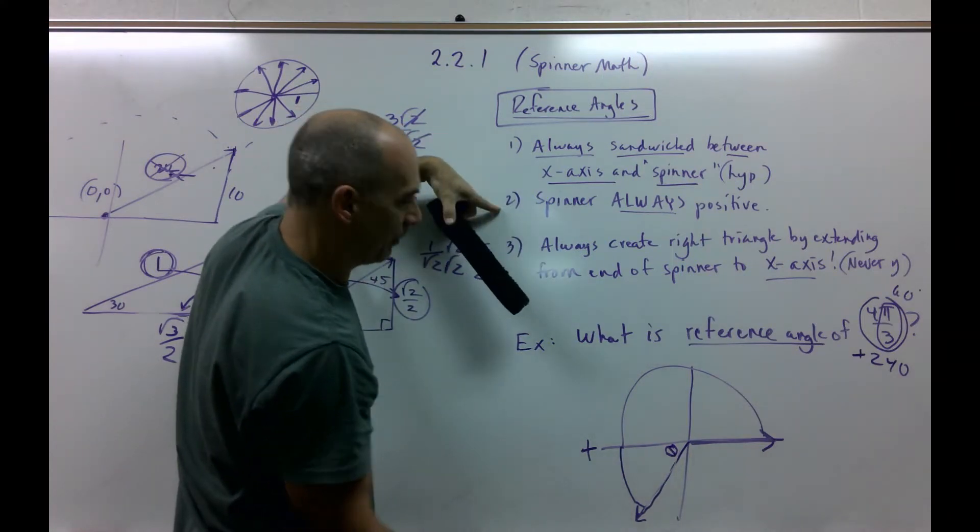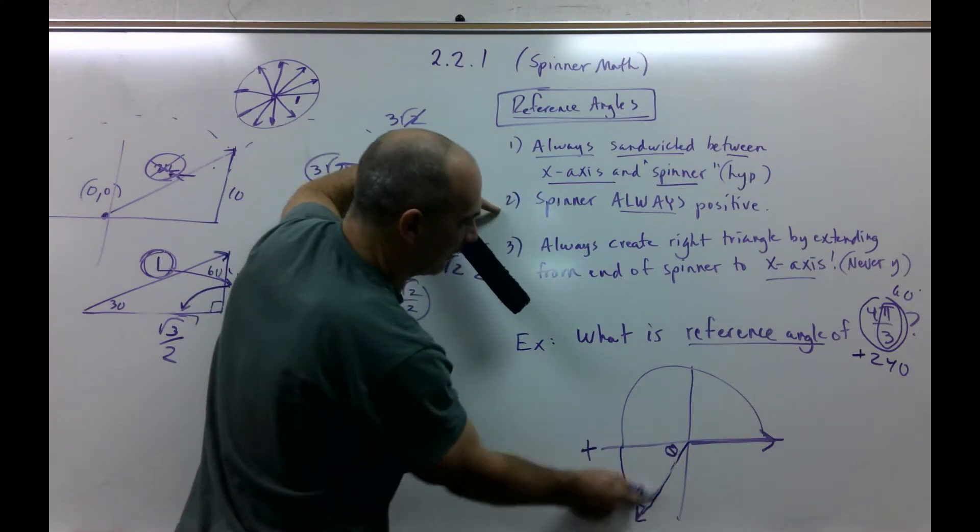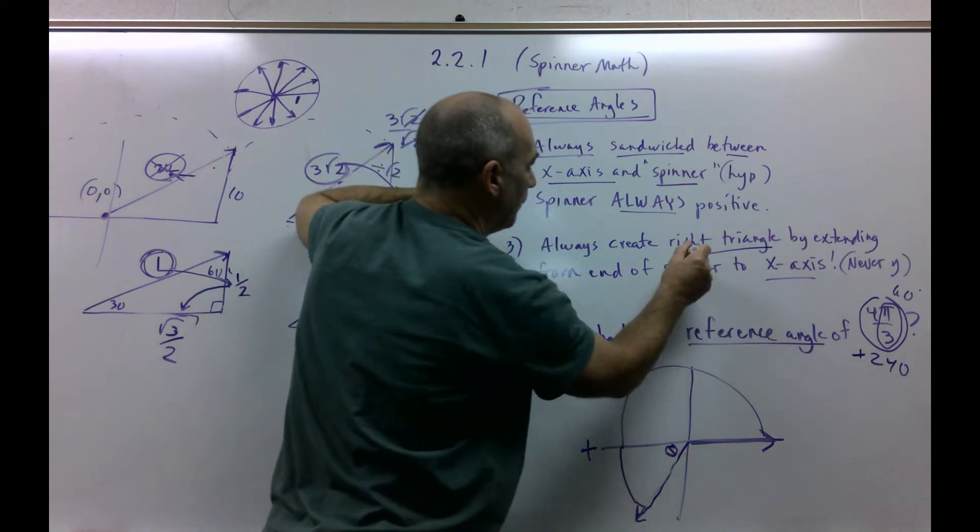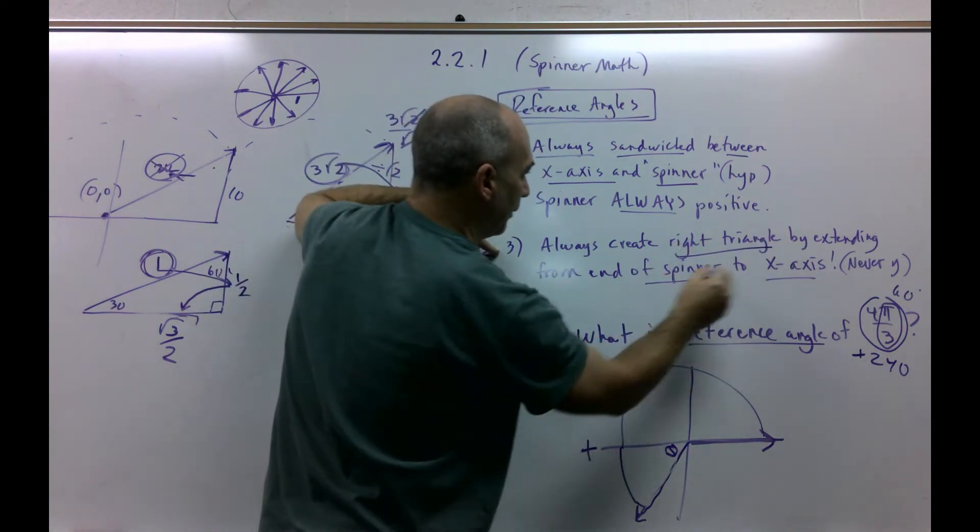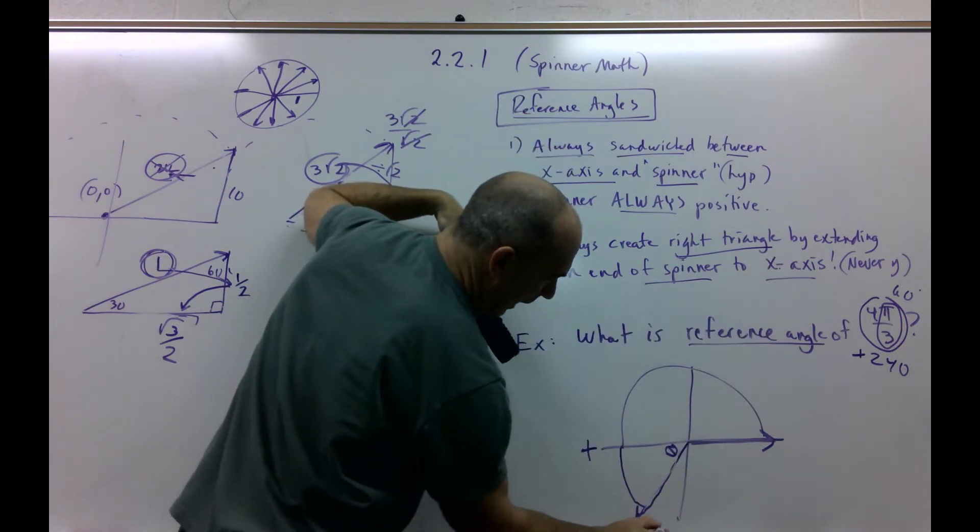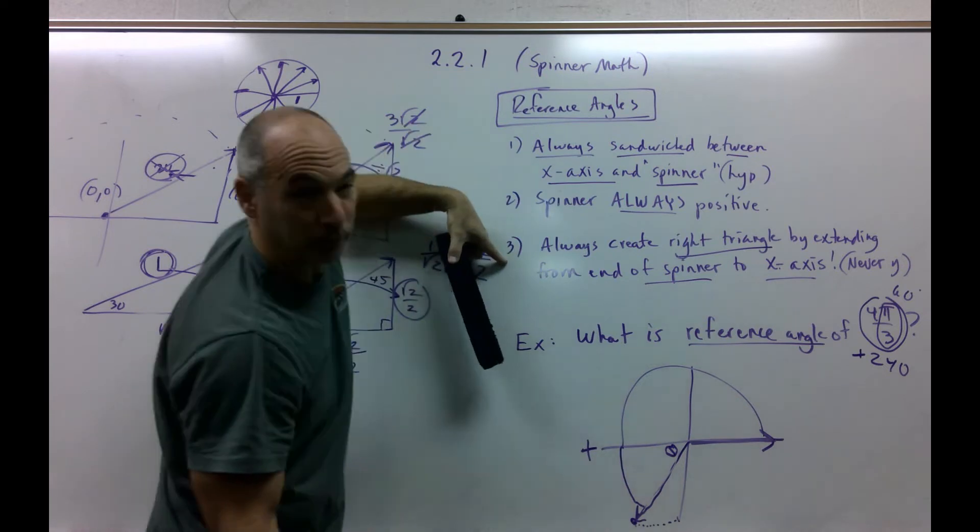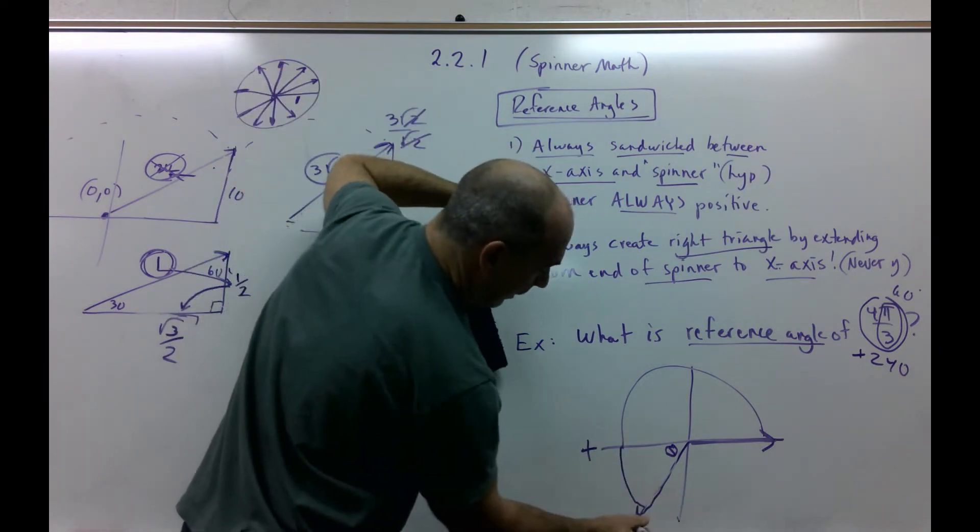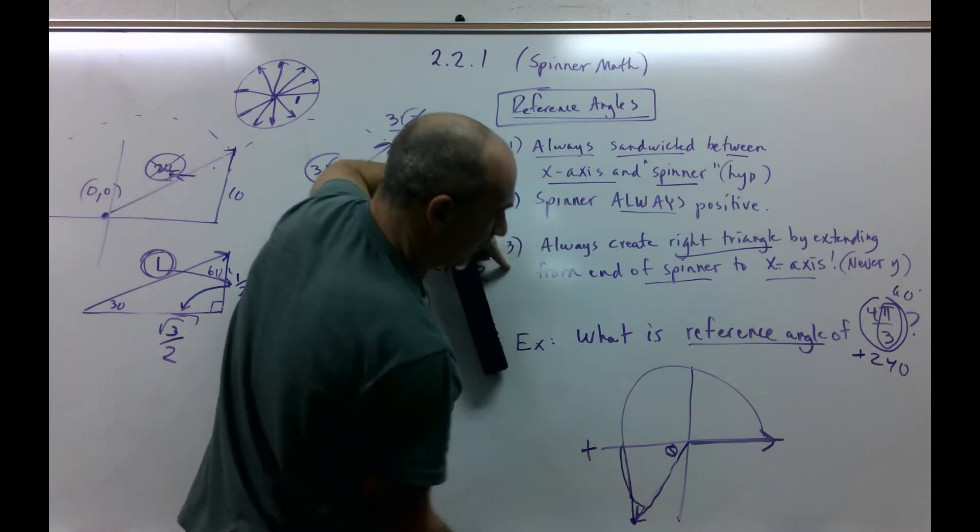So my reference angle must be right there. The spinner is always positive. So never think of this as negative. I'll show you why. Always create a right triangle by extending from the end of the spinner to the x-axis. Here's the end of the spinner. Now if I went that way, I'm going to get every single problem wrong because that's extending the third side to the y-axis.